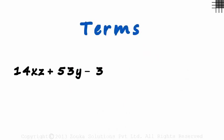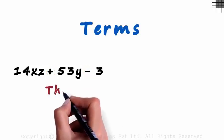Before we understand what polynomials are, let's look at the concept of terms and expressions. 14xz plus 53y minus 3. There is a plus as well as a minus sign here, which means that we have three terms.